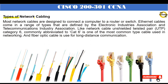Types of network cabling. Most network cables are designed to connect a computer to a router or switch. Ethernet cables come in a range of types defined by the Electronic Industries Association and Telecommunications Industry Association. Like network cable unshielded twisted pair UTP category 6, commonly abbreviated to CAT6, is one of the most common types used in networking. Fiber optic cable is used for long distance communication.